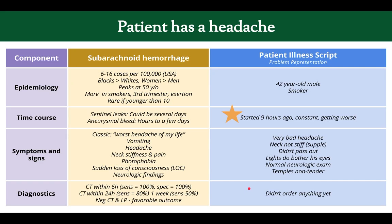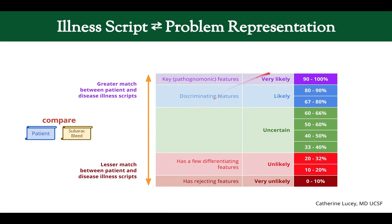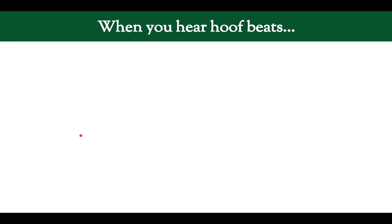He has a normal neurologic exam and no neurologic findings, and we haven't ordered any tests. Still, the sudden onset nine hours ago and a very bad headache concern me. If he had said 'worst headache of my life' with an occipital location, I'd put it higher, but I'd definitely place this in the likely category — somewhere between 67 and 90% — based on comparing the illness scripts.